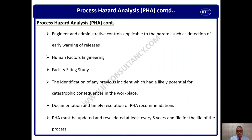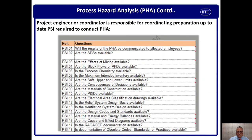PHA must be updated and revalidated every five years. Although process safety risk is not very dynamic, equipment wears and tears out over time, and many Management of Change (MOC) activities occur. PHA review once every five years — or as per the legal requirements of your area — ensures your system is designed, operated, and maintained safely.